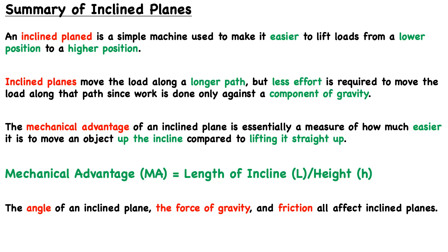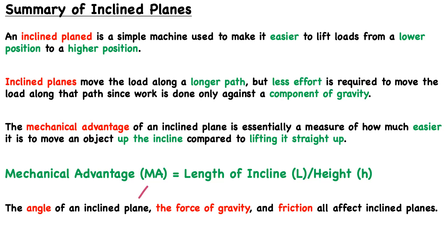To summarize what we've learned about inclined planes: an inclined plane is a simple machine used to make it easier to lift loads from a lower position to a higher position. Inclined planes move the load along a longer path, but less effort is required since work is done only against a component of gravity. The mechanical advantage is determined by the length of the incline divided by the height. The three main factors that can influence an inclined plane are the angle, the force of gravity, and friction.